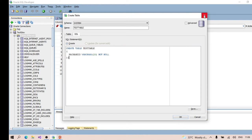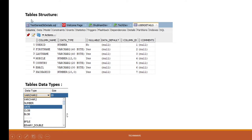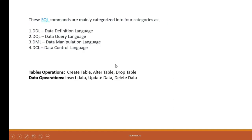We saw the table structure and data types. Now moving ahead, what type of SQL commands are we using in Oracle databases or PL/SQL? First are the DDL commands - Data Definition Language. Second are DQL - Data Query Language. Third is DML - Data Manipulation Language. Fourth is DCL - Data Control Language. We will further look at what kind of commands we use inside each category.